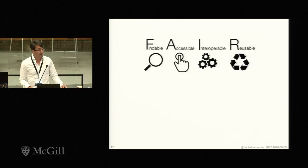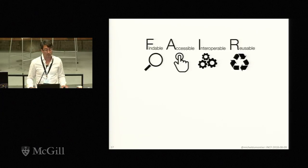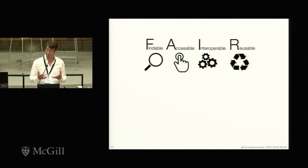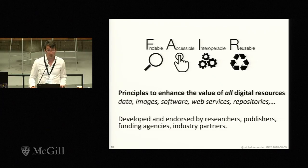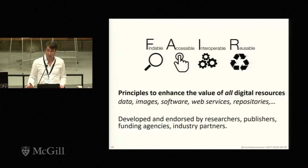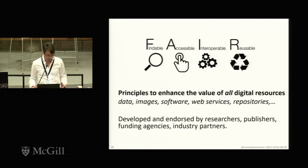This brings us to the idea of FAIR. For machines and for people to make use of other people's content, we have to take some steps to make that available. FAIR stands for Findable, Accessible, Interoperable, and Reusable. It's a set of principles developed to enhance the value of all digital resources so they become easier to find and reuse — not just for data sets, but also for web services, repositories, software, and publications.